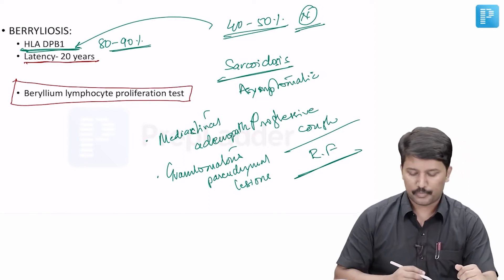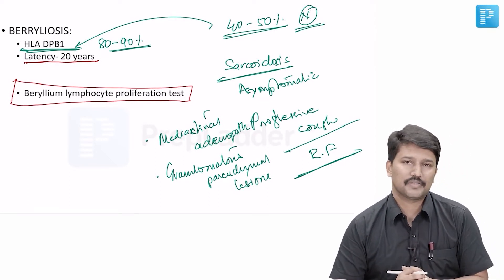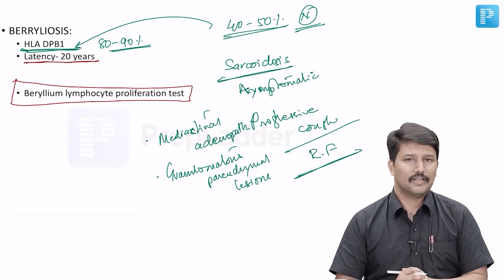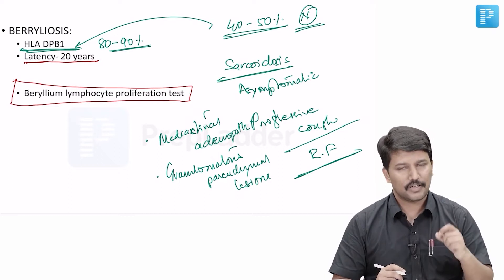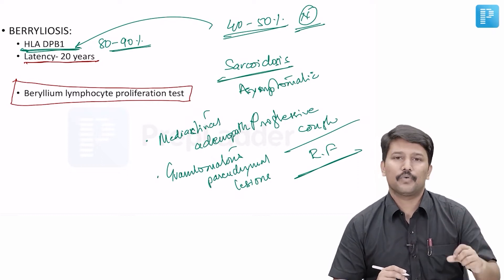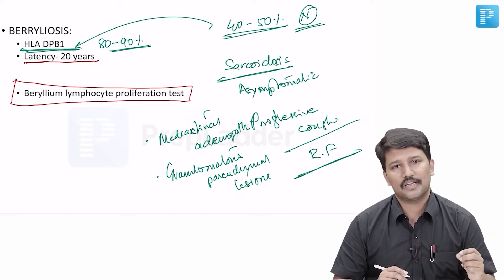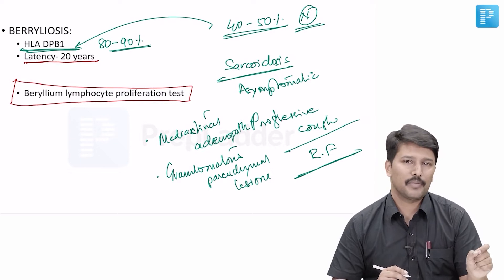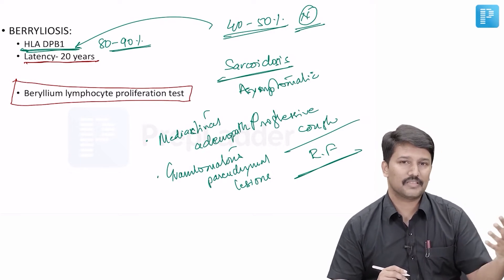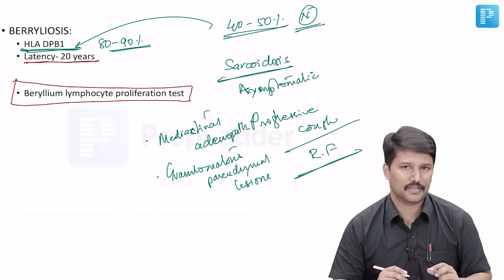Beryllium lymphocyte proliferation test. What is this test? This is a test done to identify lymphocytes which are sensitized by beryllium. So the lymphocytes which are sensitized by beryllium are identified by this test.